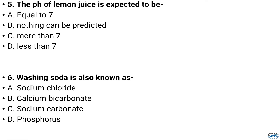Question number 5. The pH of lemon juice is expected to be — Option A: Equal to 7, Option B: Nothing can be predicted, Option C: More than 7, Option D: Less than 7. And the answer is Option D: Less than 7.